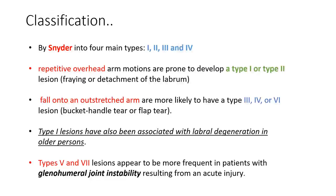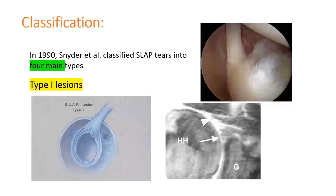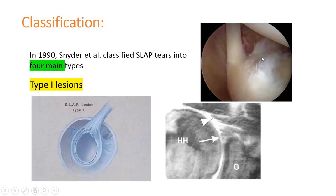Type 1 lesions are most commonly seen in older individuals and are generally considered degenerative. We do not have significant complaints from this type. You see fraying of the superior labrum where the anchor is attached — the biceps anchor shows fibrillation and fibers appearing detached from the superior labrum. In MRI coronal view, a linear high signal intensity is seen extending medially.